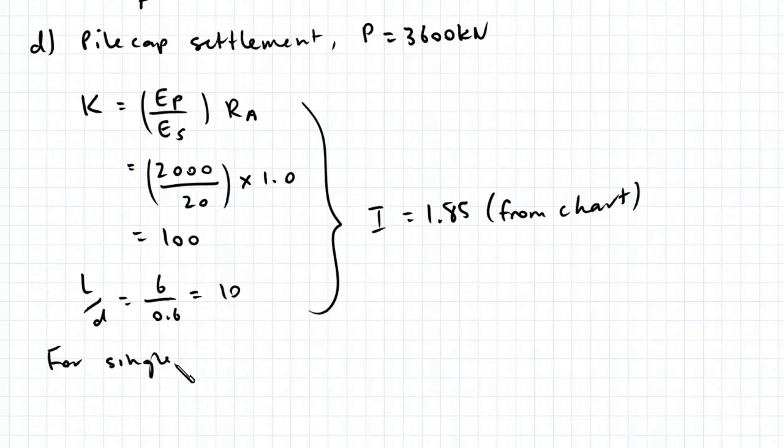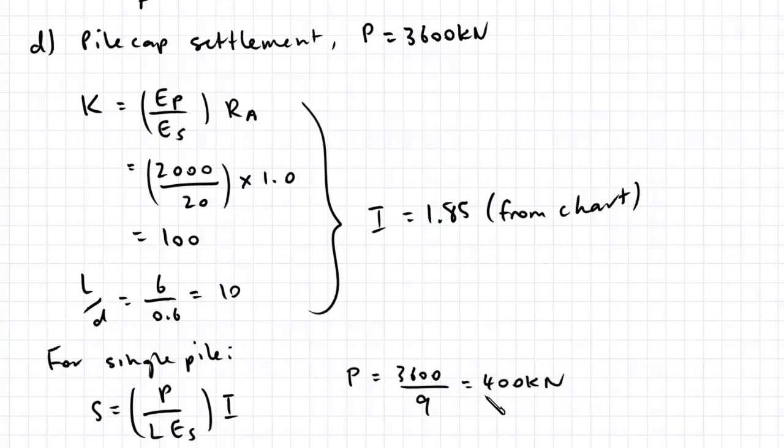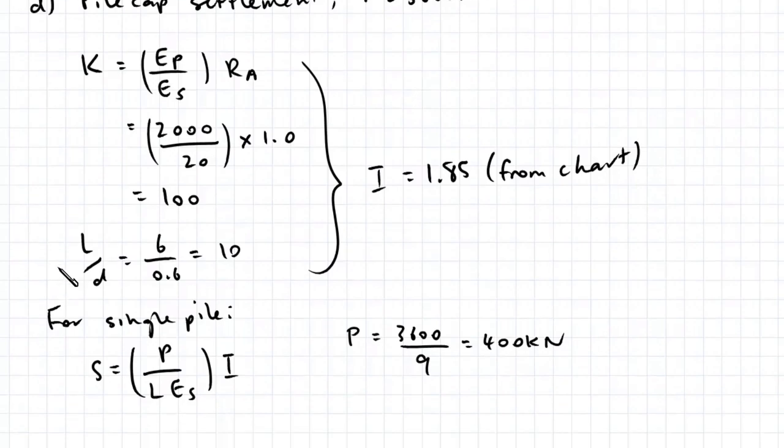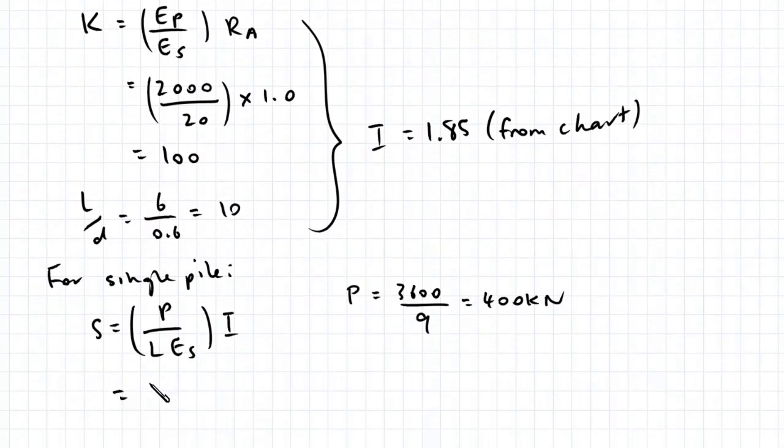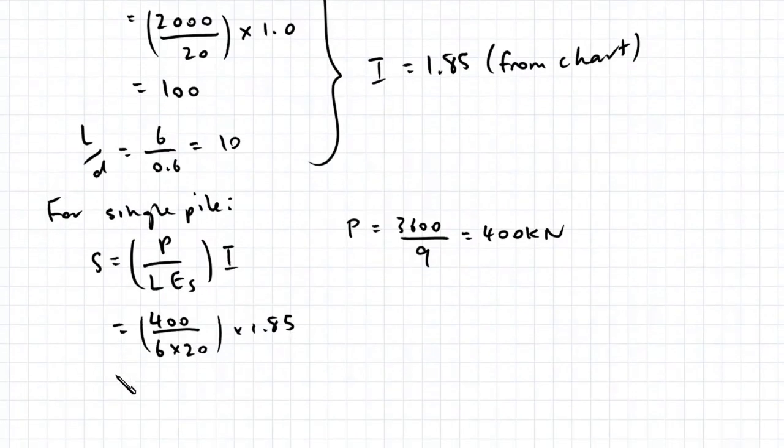For a single pile, the settlement equation is P over Les multiplied by i. P for a single pile is the total applied force divided by the number of piles, giving us 400 kN. That's 400 divided by 6 multiplied by 20 multiplied by the influence factor 1.85, giving us a settlement of 6.17 mm.